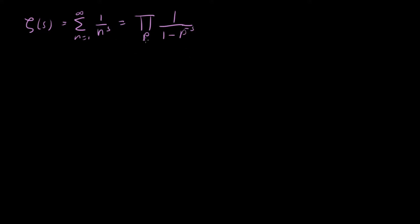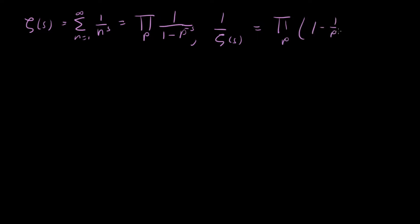In the process of doing this, we also found that 1/ζ(s) was exactly this thing, but with all the terms in the product flipped. So that was equal to a similar product over primes, but of the form 1 - 1/p^s.